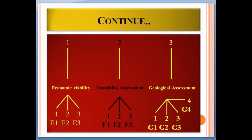Because the codes work in decreasing order, the highest categories of ore reserves each have code 1 in economic viability, feasibility, and geologic axes — giving code 1-1-1. The lowest categories have code 3-3-4.